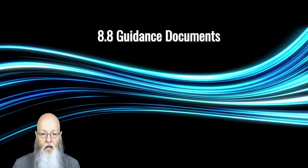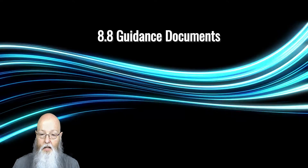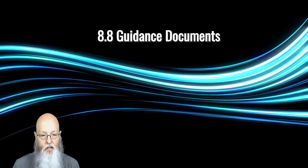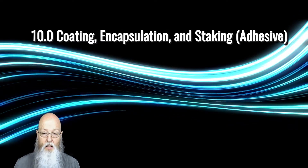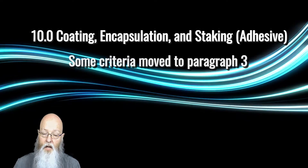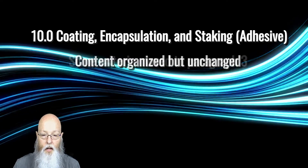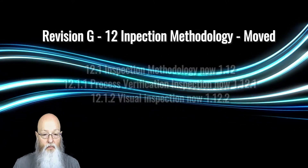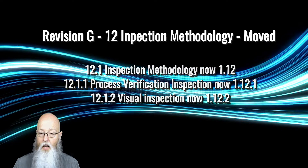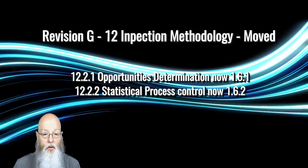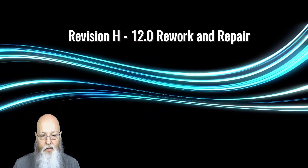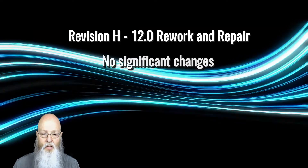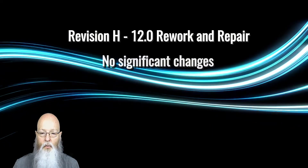Moving to section 10, we find that some of the criteria has been moved to paragraph 3. The remaining content has been organized but remains largely the same requirements as in Revision G. All of Revision G paragraph 12 inspection methodology has been moved to other locations throughout the document. What was previously paragraph 13, rework and repair, is now paragraph 12. The good news is that there were no significant changes to the rework and repair requirements.